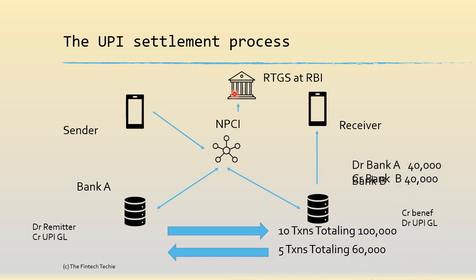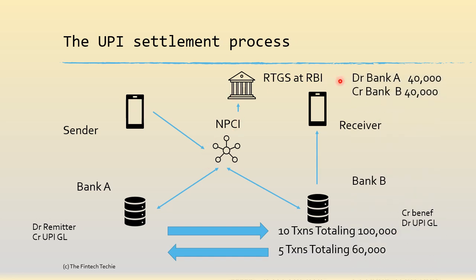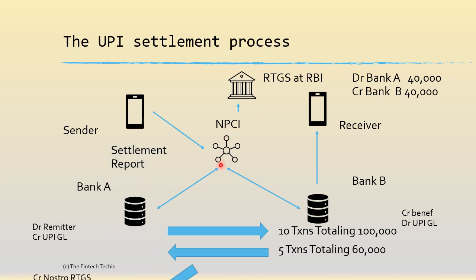NPCI sends a request to debit Bank A for ₹40,000 and credit Bank B for ₹40,000. It is important that both banks maintain adequate liquidity in their RTGS accounts. At the same time, NPCI sends a settlement report to Bank A containing the list of transactions so that Bank A can do reconciliation on its own.